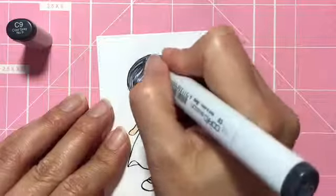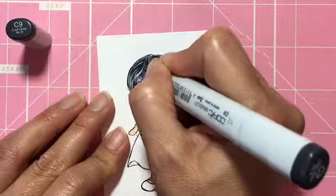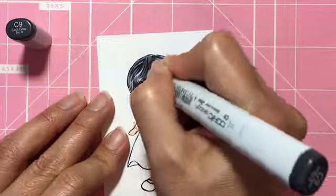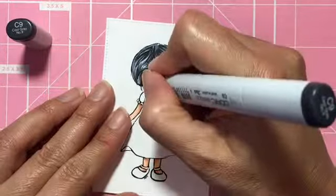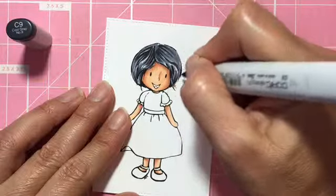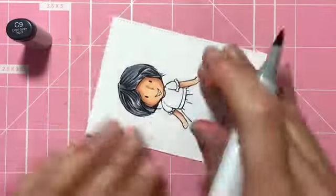Now I decided to go with C9 because I didn't think that C7 was dark enough. So I am going over some of the areas with C9 and just darkening some areas. I just keep going over them until I'm happy.